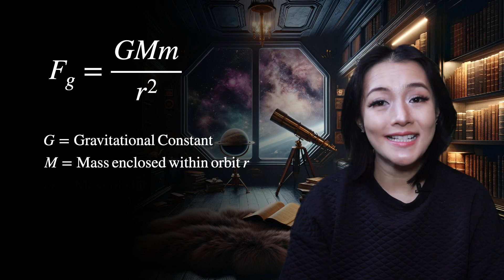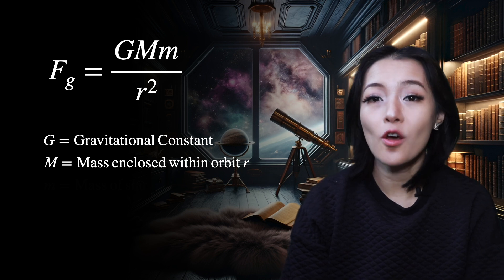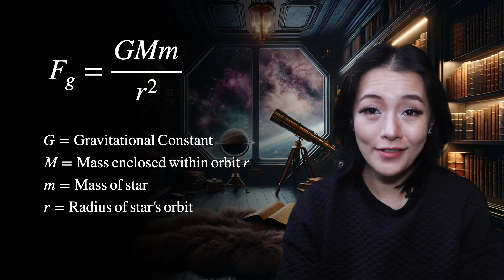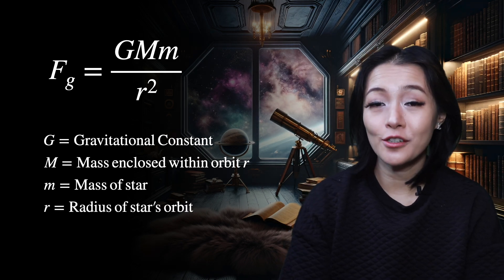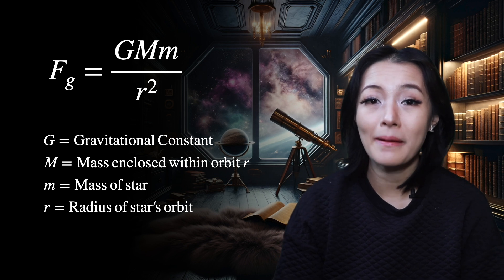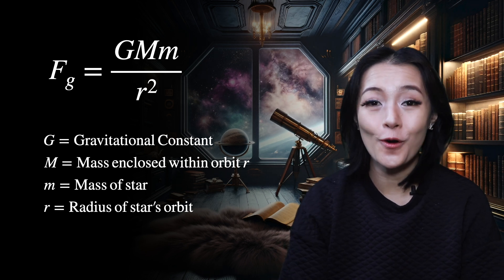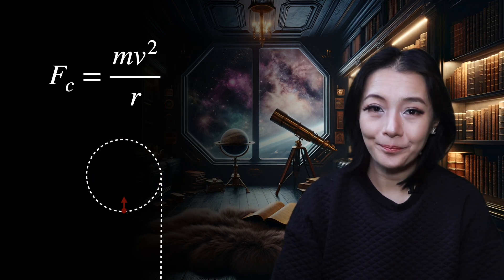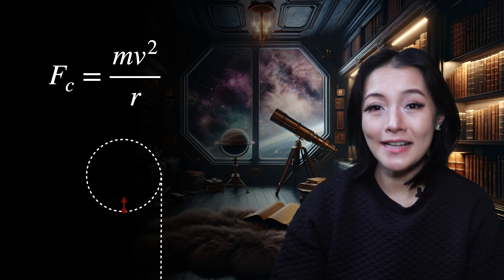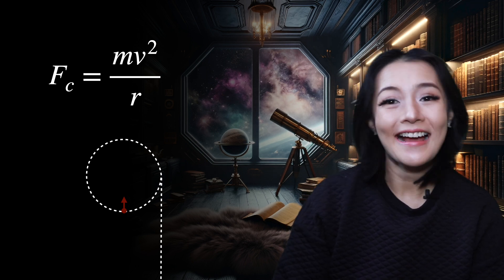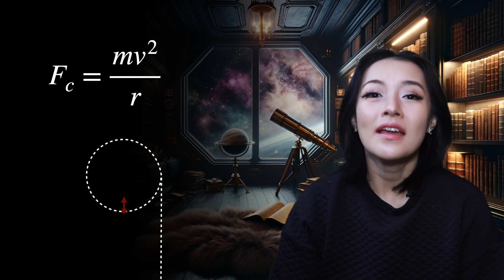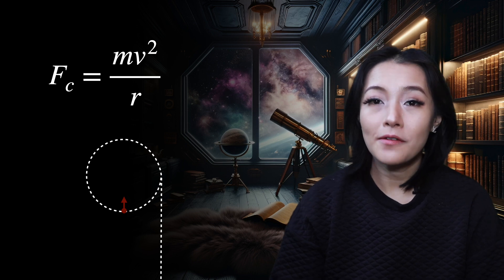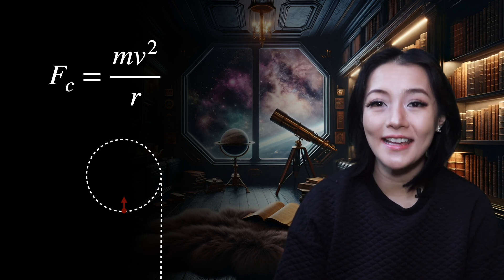According to Newton's law of gravitation, the gravitational force acting on a star should follow F = GMm/R², where G is the gravitational constant, capital M is the mass of the galaxy enclosed within the orbit of the star, little m is the mass of that star, and R is the radius of its orbit. In order to keep the star in orbit — moving in a circular path rather than flying off — we need a centripetal force, given by F = mv²/R.